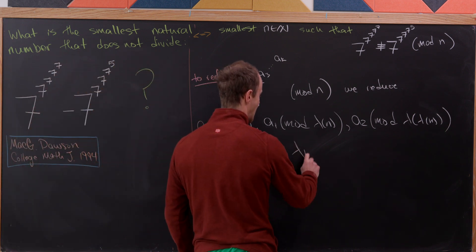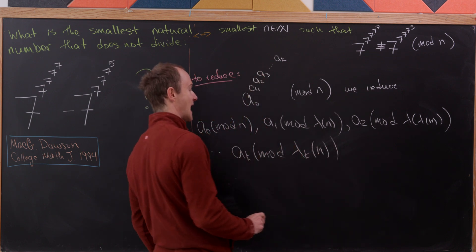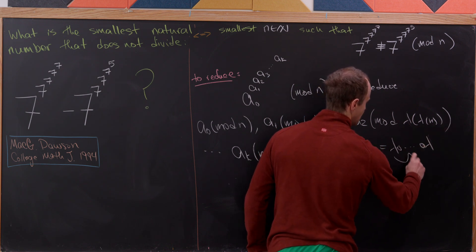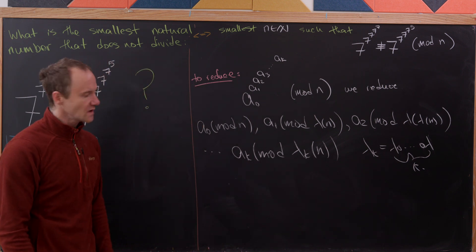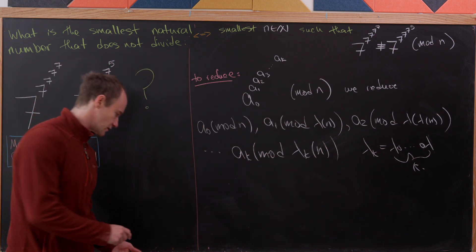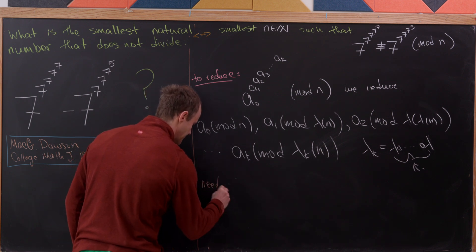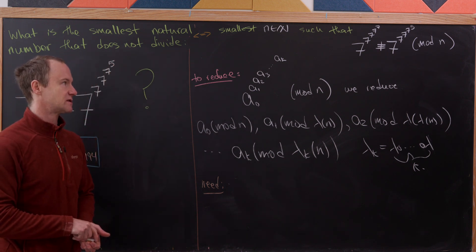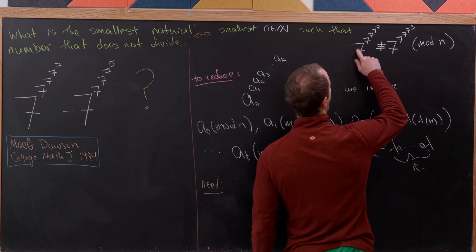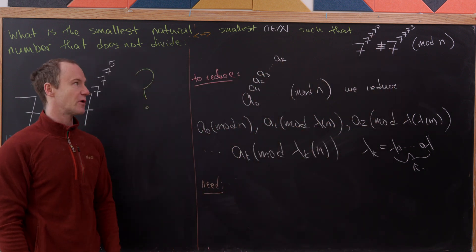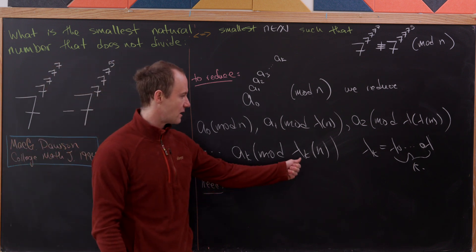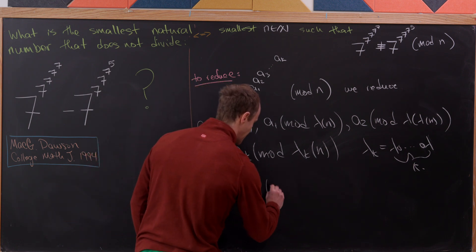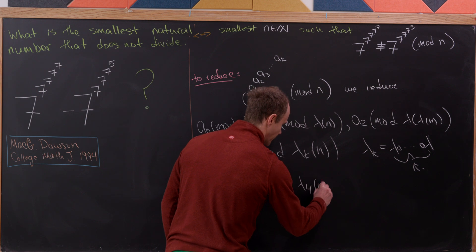In general, a sub k is reduced mod lambda sub k of n, where lambda sub k denotes the k-fold composition of lambda. Our two power towers match on the base and first three exponents, so we need those fourth exponents — 7 and 5 — to be incongruent mod lambda sub 4 of n. That is, we need 7 to be incongruent to 5 mod lambda sub 4 of n.